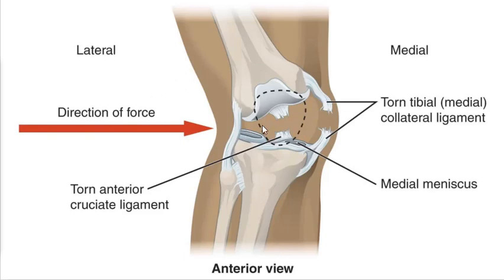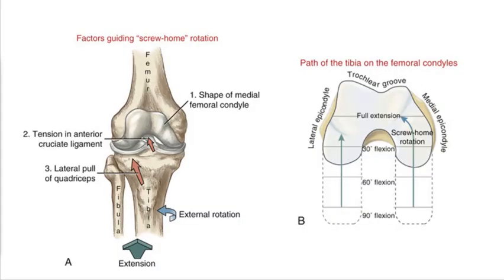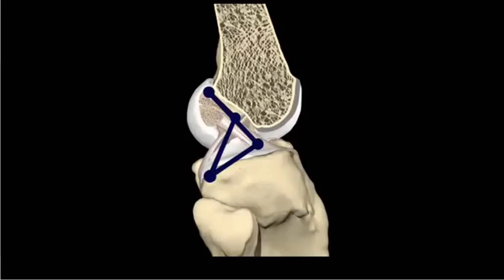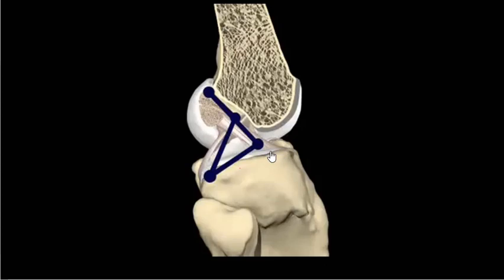So there's your direction of force, your torn ACL, MCL, and medial meniscus. Make sure you're reviewing pages 219 and 225, and really making sure you're aware of how these collateral ligaments are holding the knee together. Varus and valgus forces — valgus is bringing the knees together. So if the knees come in, that's a valgus position.